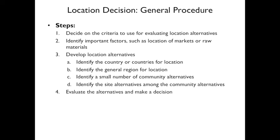Here's the general procedure. First, decide what criteria you're going to use and identify the important factors. Then develop location alternatives: identify a country or countries, identify the general region, identify a small number of community alternatives, identify site alternatives among those communities, and then evaluate the alternatives and make a decision.